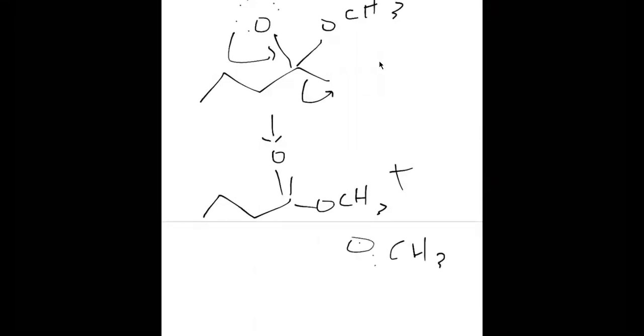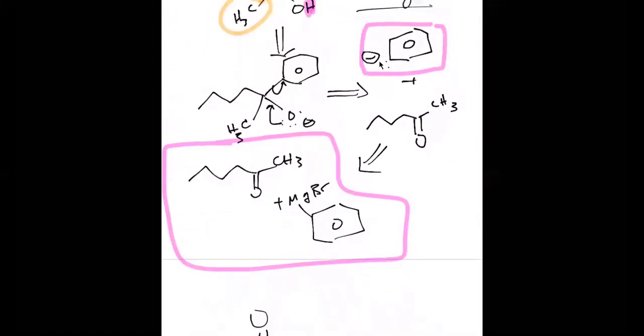That will be starting at the ketone and working your way back to the ester. In these cases we're starting with the alcohol, so we're actually working our way back to either an aldehyde or a ketone. There's a difference, but that's a great question.